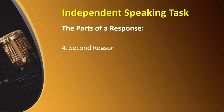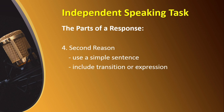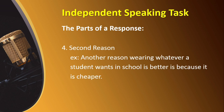Next, you again have to give a reason. If you read an independent speaking question in full, you will notice that the last sentence of the prompt always tells you to include reasons and details. In giving your second reason, follow the same approach as your first — you may still use a simple sentence. In such a short response, using two types of sentence structures would be enough. Do not forget your transition or expression to signal your listener that you are now giving your second reason. For example: 'Another reason wearing whatever a student wants in school is better is because it is cheaper.'